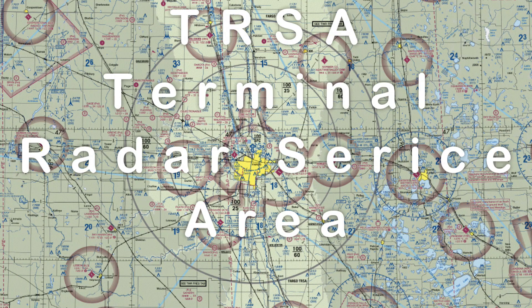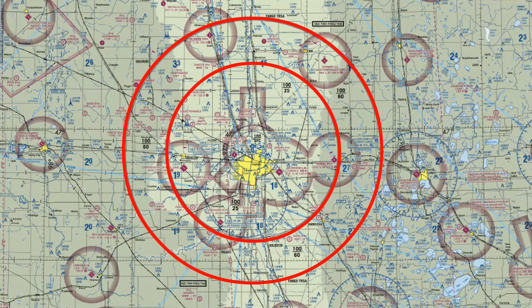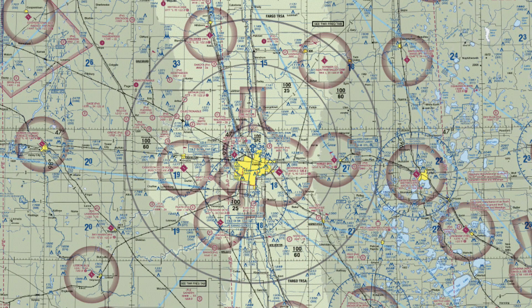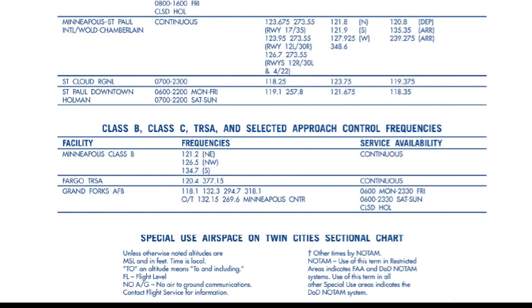A terminal radar service area, or TRSA, is somewhat of a leftover from the designation of the A through G classes of airspace. Their purpose is to provide radar services to IFR and participating VFR aircraft. The primary airport will be within Class D airspace, as shown with a dashed blue outline, while the dimensions of the TRSA itself are shown with a black border and black altitude ranges for the vertical boundaries. Participation is optional, but encouraged. Glider pilots should consider the area to potentially have above-average levels of air traffic and use caution. The contact frequency is displayed in the chart legend labeled Class B, C, TRSA, and selected approach control frequencies.